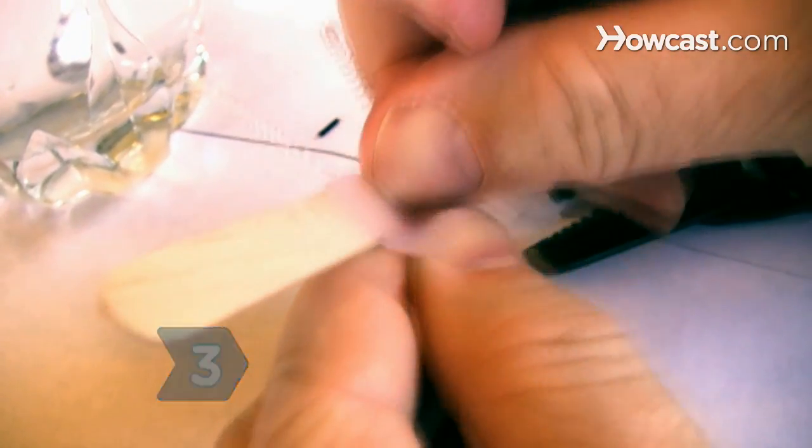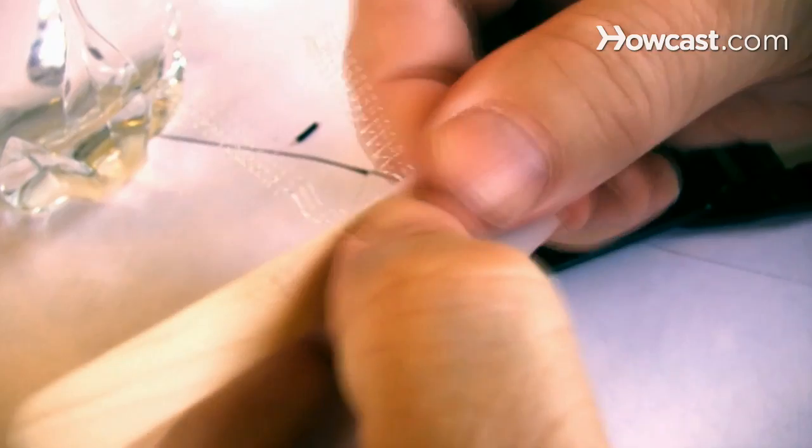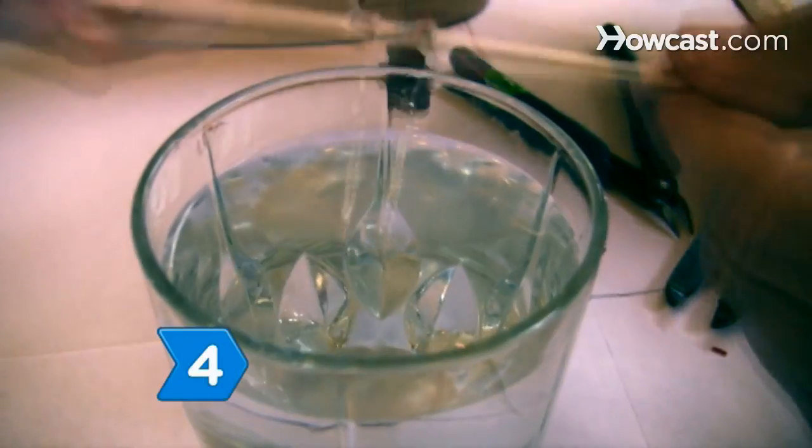Tape both electrodes next to one another in the middle of the popsicle stick. Put the tape on the twisted leads where they meet the coil. Step 4.